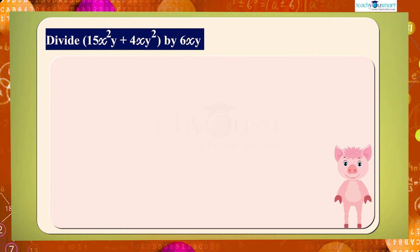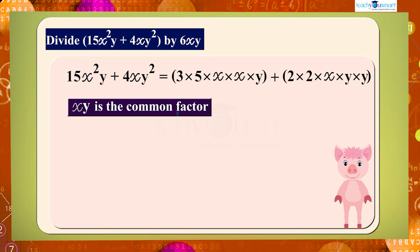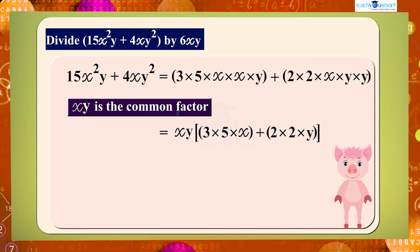We can write 15x squared y plus 4xy squared as 3 × 5 × x × x × y plus 2 × 2 × x × y × y. Here, x × y is a common factor, so it equals xy multiplied by (3 × 5 × x plus 2 × 2 × y), which equals xy multiplied by (15x plus 4y).